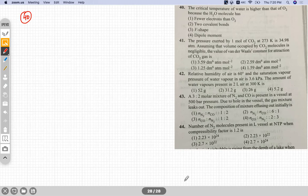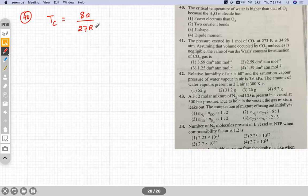No, not 0.821, it should be SI, so it should be 8.314. So what is the formula of critical temperature? 8A by 27RB. Correct.